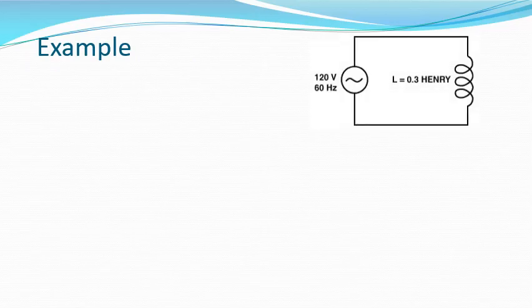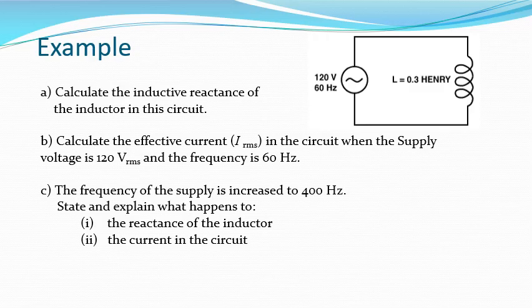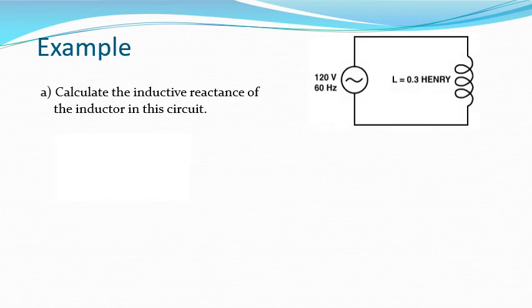Let's look at an inductor in an AC circuit with a 120 volt, 60 hertz AC supply. We're asked to work out the inductive reactance, the current in the circuit for those conditions, and then state and explain what happens when we increase the frequency from 60 hertz to 400 hertz. To calculate the inductive reactance, we have the frequency so we use the relationship X_L = 2πfL, substitute in our values, and get a value of 113 ohms.